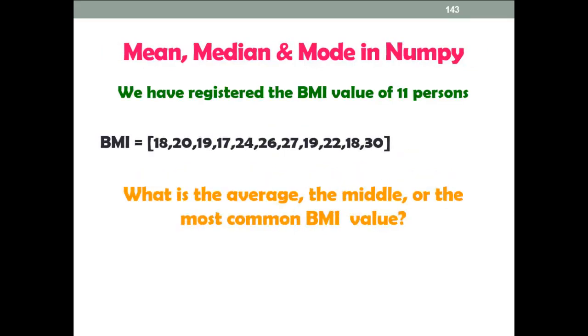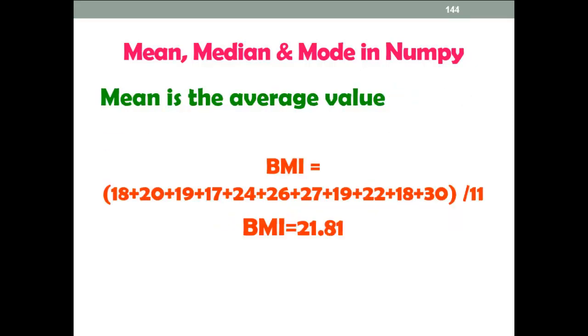As you can see here we have registered BMI values of 11 persons just to explain you mean, median, and mode. Now to calculate the mean, first find the sum of all values and divide the sum by the number of values that you can see over here. Here we have used total 11 numbers. So divide it by 11 just to find average value.